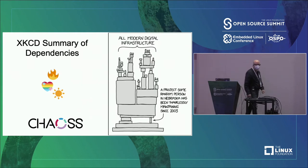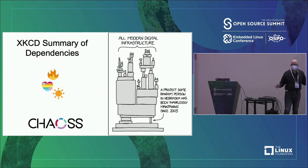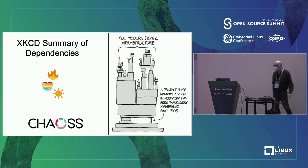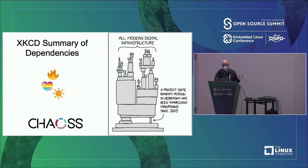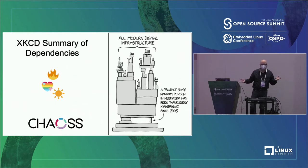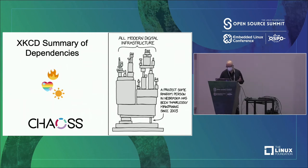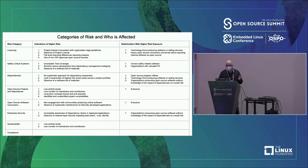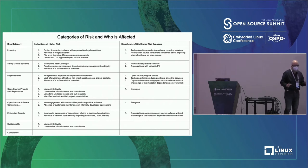Let's get to dependencies. When we entered the dependency realm, this XKCD example is a really good one: all modern digital infrastructure, and then some random project in Nebraska that somebody's been maintaining holds the whole thing up. It's a very popular cartoon in open source. When we waded into risk further, we realized we weren't dealing with just one thing when dealing with dependencies — there are a lot of different dimensions.